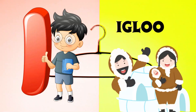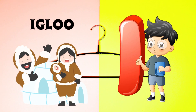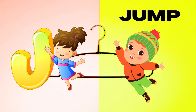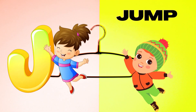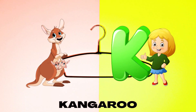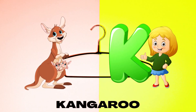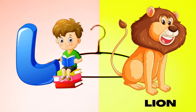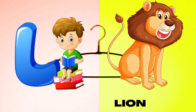I is for Igloo, I-I-Igloo. J is for Jump, J-J-Jump. K is for Kangaroo, K-K-Kangaroo. L is for Lion, L-L-Lion.